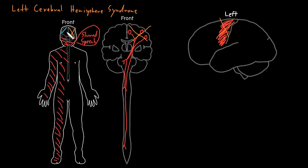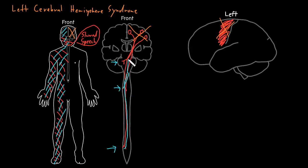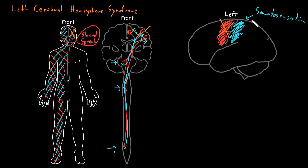We will often also see somatosensory abnormalities, usually of all modalities of the right side of the body. The reason for that is because all that somatosensory information coming in from the right side of the body to the spinal cord and brain stem travels up through a few different pathways to get up to the cerebrum, and once it gets there it crosses over to the other cerebral hemisphere. So pretty much all of the somatosensory information from the right side of the body comes over to the left cerebral hemisphere, to an area that has a lot to do with somatosensation. A lesion of that area, or these axons as they're passing through the left cerebral hemisphere, can cause somatosensory abnormalities of the right side of the body.